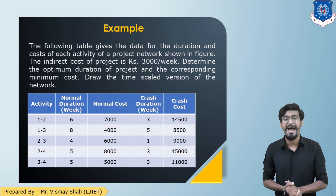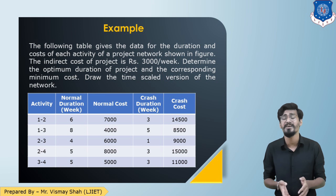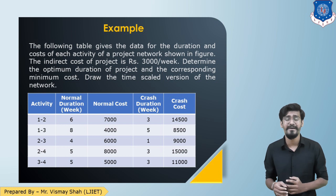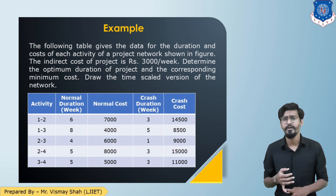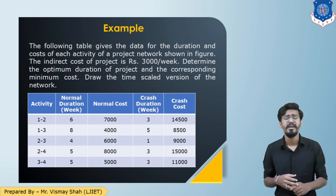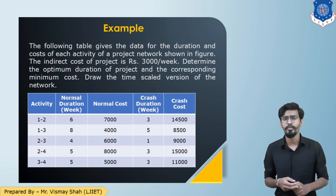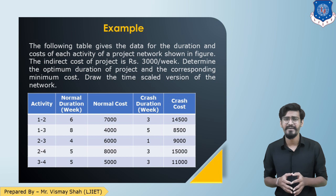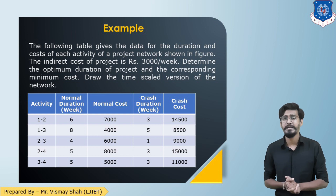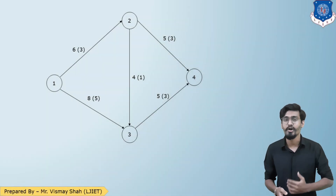We need to find the optimum duration and minimum cost associated with the project. The table has columns: activity, normal duration, normal cost, crash duration, and crash cost. Activities are given as event pairs: 1-2, 1-3, 2-3, 2-4, and 3-4. The normal durations are 6, 8, 4, 5, and 5 weeks respectively, with corresponding normal cost, crash duration, and crash cost data given.